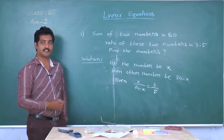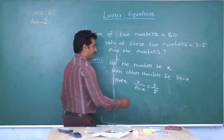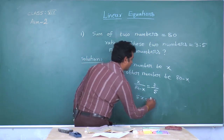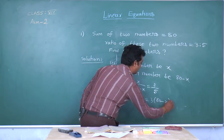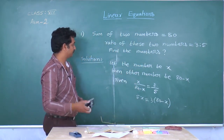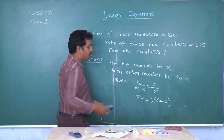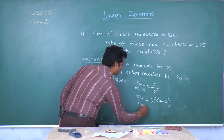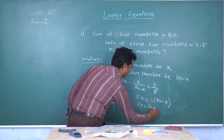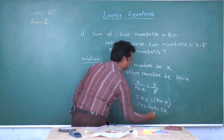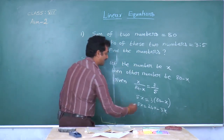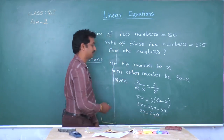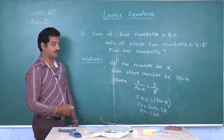Now solve for x. By cross multiplication: 5x equals 3 into (80 minus x). Using the systematic method: 5x equals 240 minus 3x, so 8x equals 240, therefore x equals 30.